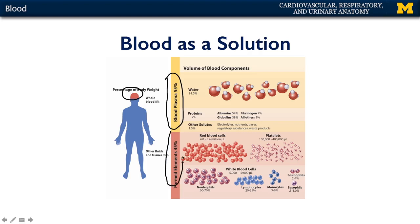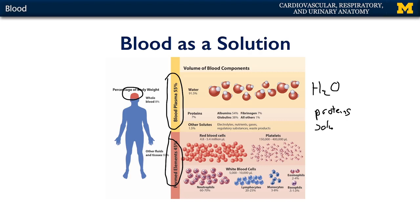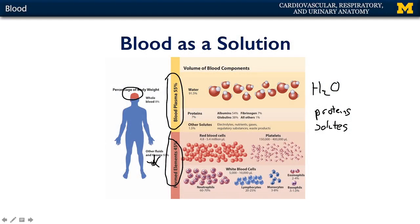And then there are the formed elements, which comprise about 45%, or the remaining total of blood. Within the blood plasma, water accounts for about 92% of its volume. The remainder includes a number of proteins and other dissolved solutes within the blood. The plasma would appear to the casual observer as a clear fluid, and contained within that plasma would be the formed elements.